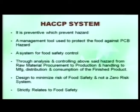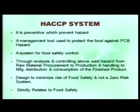Just before we go into the prerequisite programs in detail, here is an overview of the HACCP system. It is a preventive-based system to prevent hazards; it is a management tool to protect food against physical, chemical, and biological hazards. It is a food safety control system by analyzing and controlling hazards from raw material procurement through production, handling, manufacturing, distribution, and consumption. The HACCP system is designed to minimize food safety risks — it is not a zero-risk system, and it strictly relates to food safety, not quality aspects.